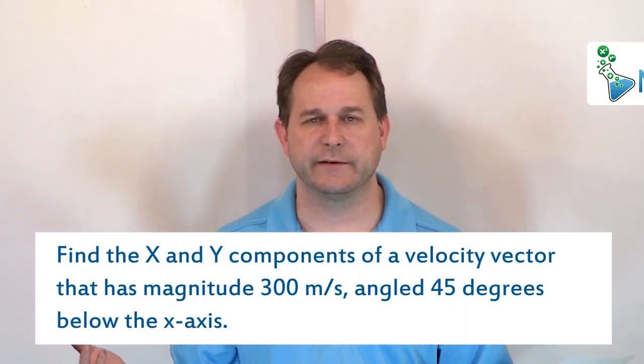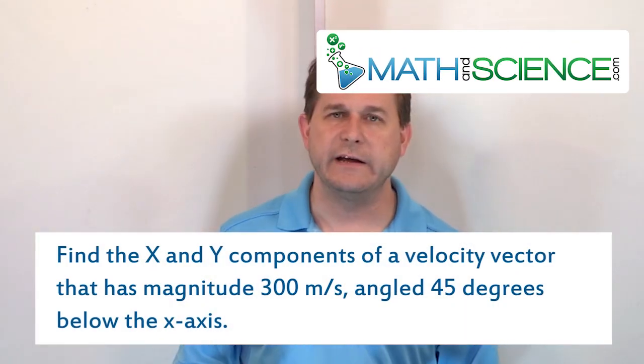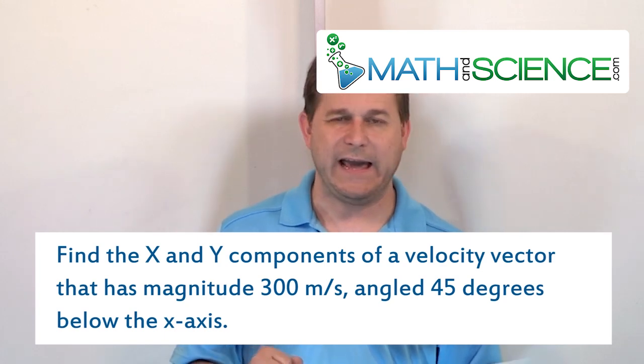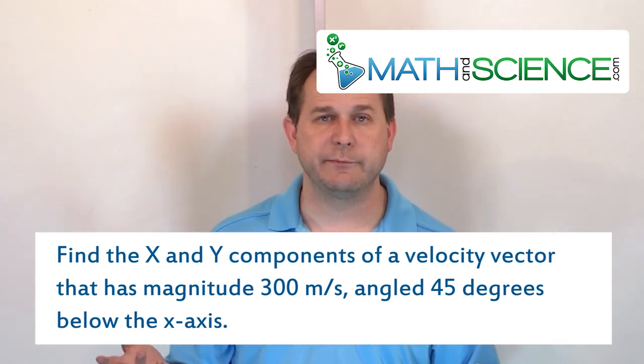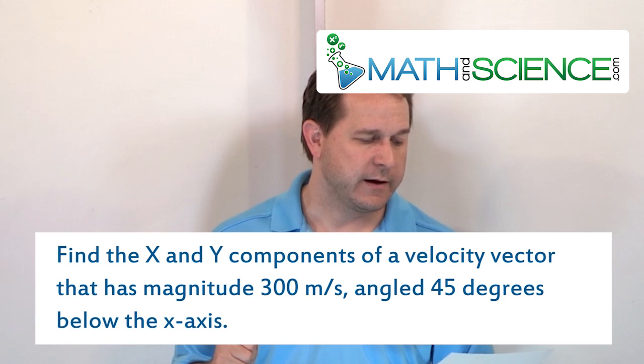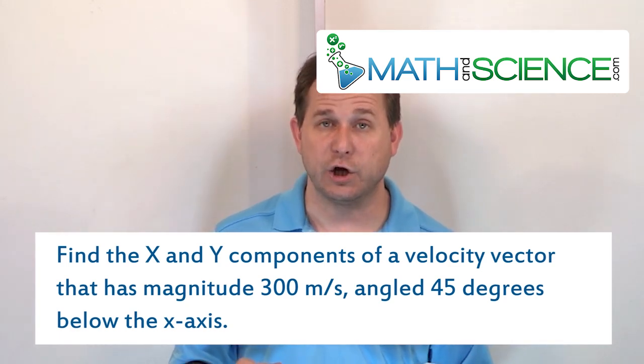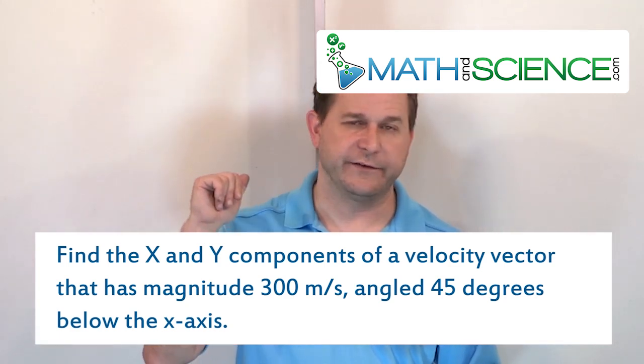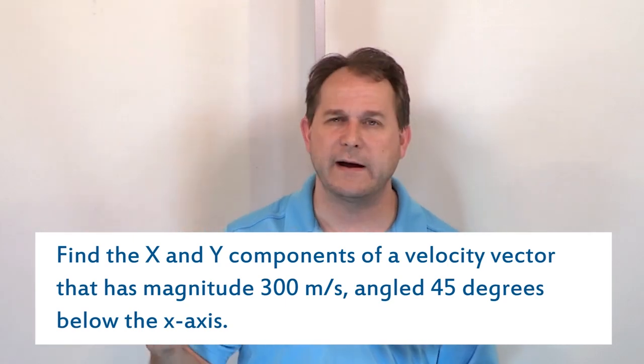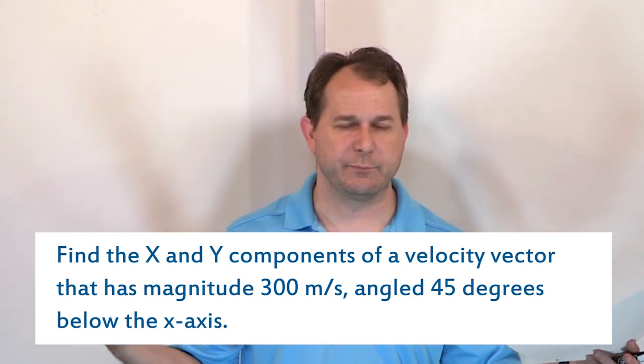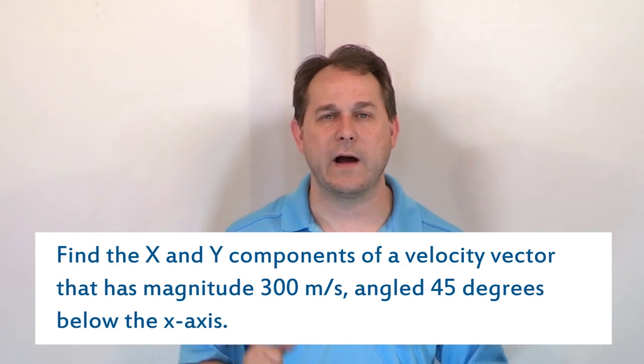Find the x and y components of the following vector. The vector has a magnitude of 300 meters per second at 45 degrees below the x-axis. So the vector is 300 meters per second, 45 degrees below the x-axis. Very simple question. Find the x and the y components.